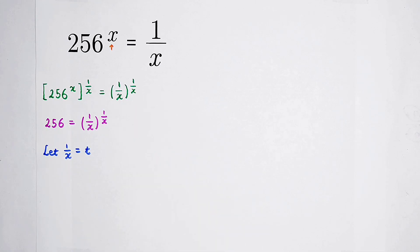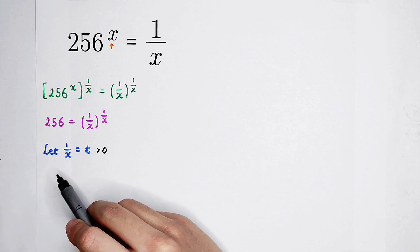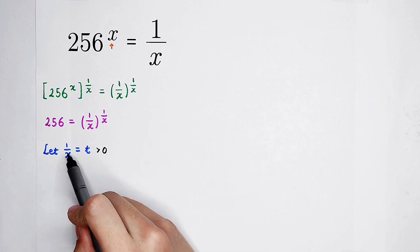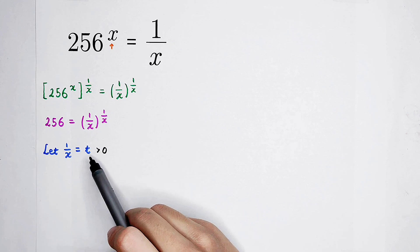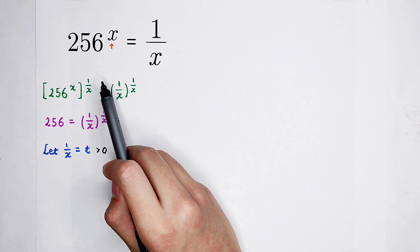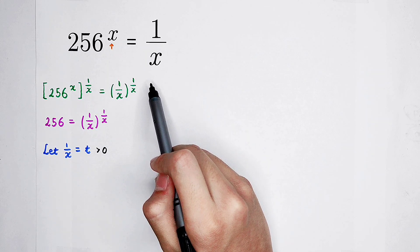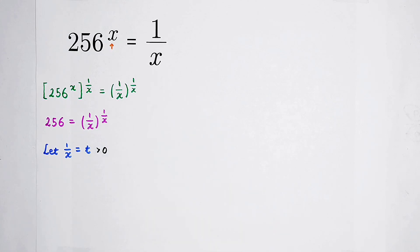We can let 1 over x be equal to t. The range of t is always positive. When t equals 0, this substitution doesn't hold since x is the denominator and can never be 0. And when t is smaller than 0, then x should also be smaller than 0. However, the left-hand side is always positive, and the right-hand side would be negative, so the original equation would not hold. So t can only be positive.